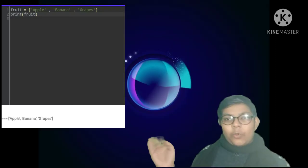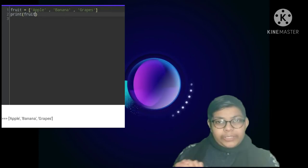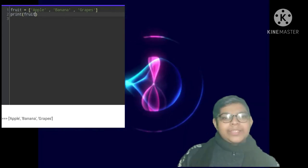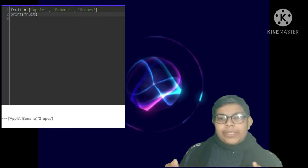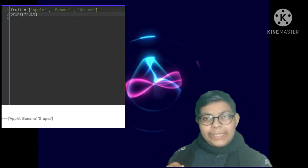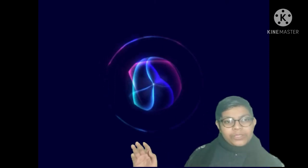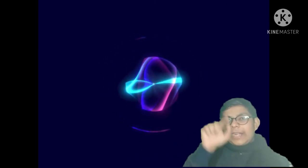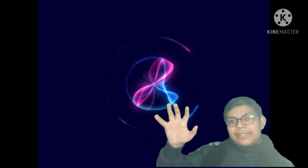And then what you have to do is use an equal operator and write names of fruits in square brackets. Start a square bracket and inside them write names of apple comma banana comma grapes. So that's it, we have created our list.